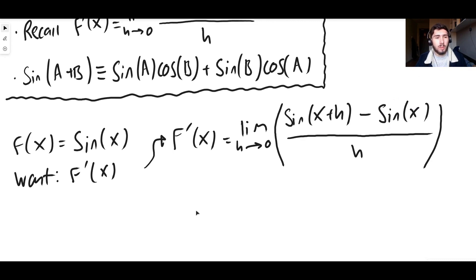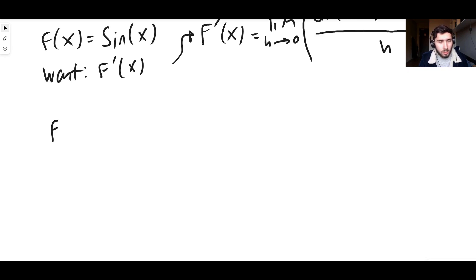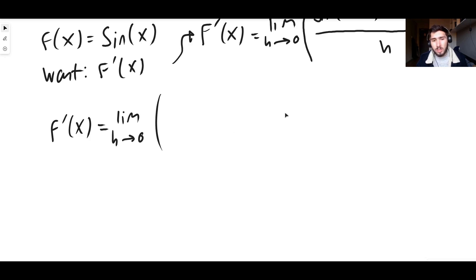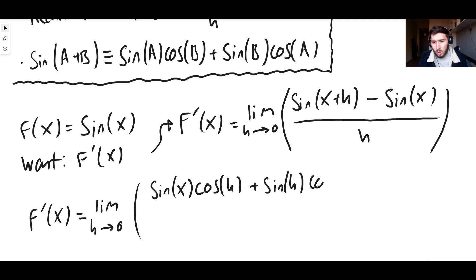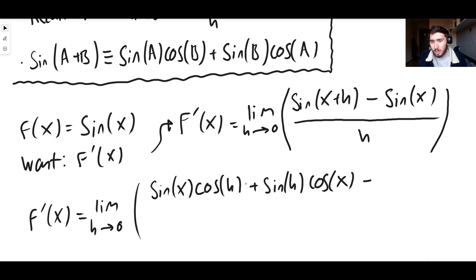So what we need to do is put this in a form we can deal with. We're going to change sine of x plus h into something else using the addition formula. We know that sine of a plus b is sine a cos b plus sine b cos a. We can do this with x and h. So f prime of x is equal to the limit as h approaches 0, but this time instead of sine of x plus h, we replace that with sine of x cos h plus sine of h cos of x. That is sine of x plus h using the addition formula — we're substituting x as our a and h as our b. And we still need to take away sine x, and this is still being divided by h.